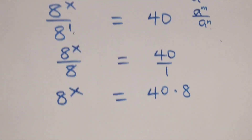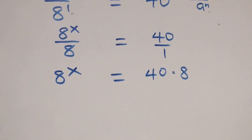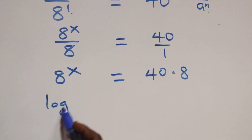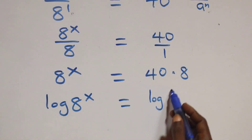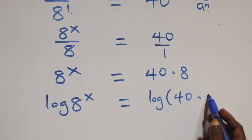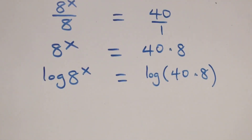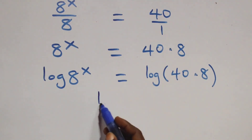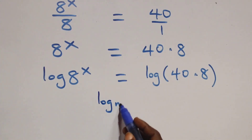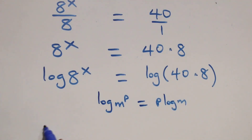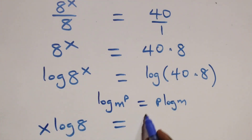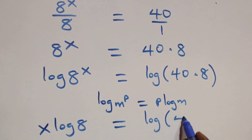On this side, we take the log on both sides. We have log of a raised to power x equals log of 40 times 8. We apply the power log rule: when we have log n raised to power p, this is the same thing as p log n. So we have x log 8 equals log of 40 times 8.